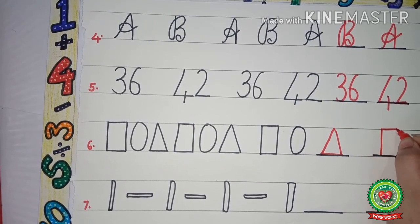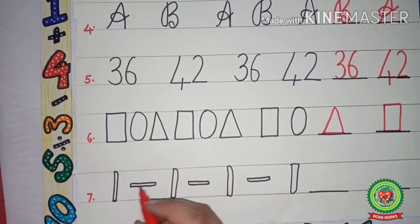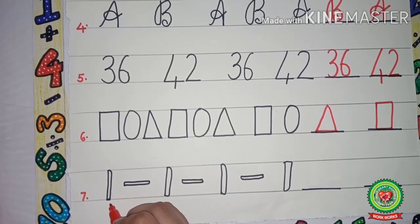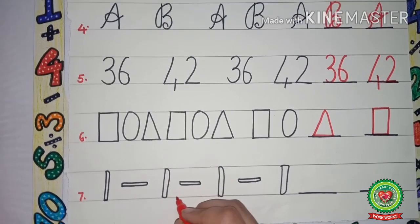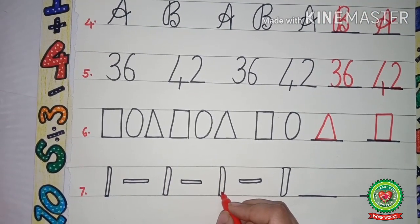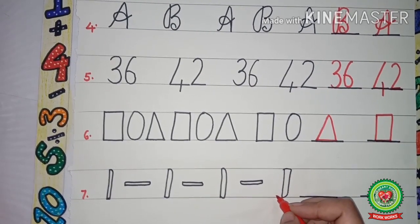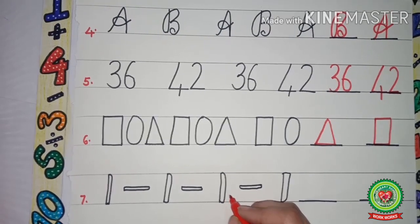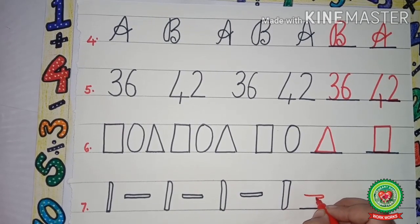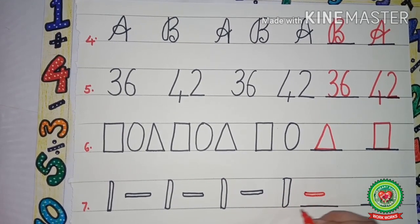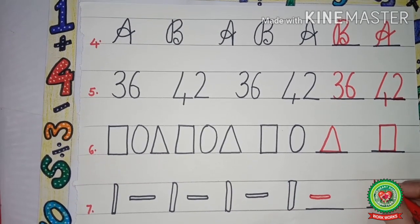Next is a standing line, a sleeping line, a standing line, a sleeping line, a standing line, a sleeping line, a standing line. Now what is coming after a standing line — a sleeping line — so we will draw a sleeping line here. Now what is coming after a sleeping line — a standing line — so we will draw a standing line here.